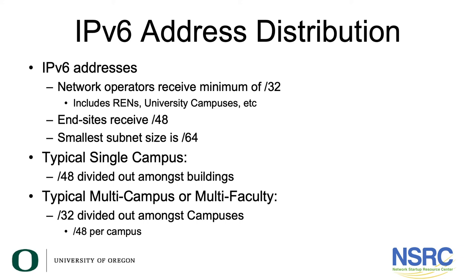A typical campus will have a /48 divided out amongst its buildings. A typical multi-campus or multi-faculty institution would have a /32 divided out amongst its campuses, basically allocating a /48 per campus.